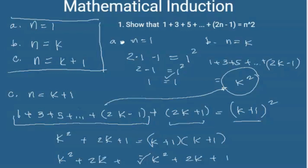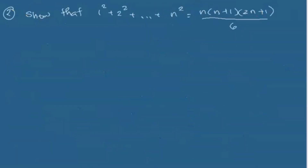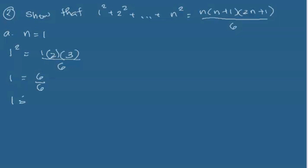Next example: show that one squared plus two squared plus ... plus n squared is equal to n times the quantity n plus one times the quantity two n plus one, all over six, for every positive integer n. The first step is to show that the statement is true if n equals one: one squared equals one times one plus one times two times one plus one all over six, which is one times two times three over six, so one equals one.